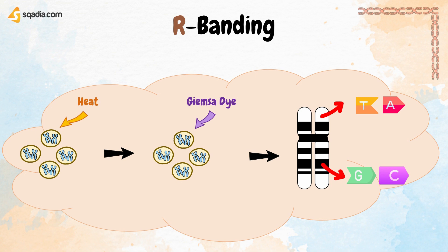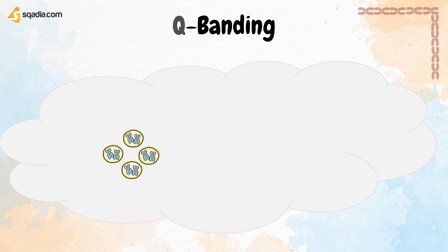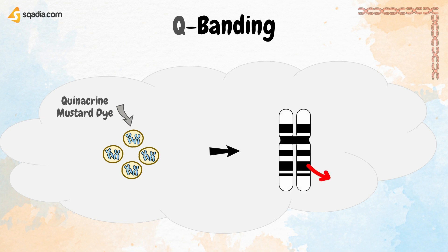Next is Q-banding. In this type of banding, chromosomes are treated with quinacrine mustard dye. The result is the same as Giemsa staining: dark bands are rich in adenine and thymine, and light bands are rich in guanine and cytosine.